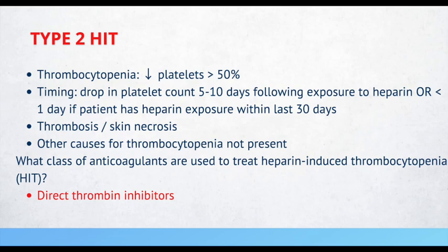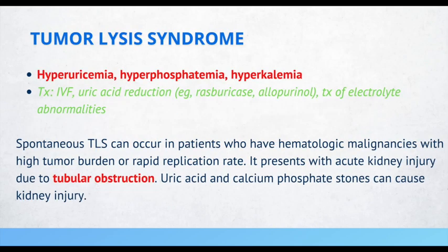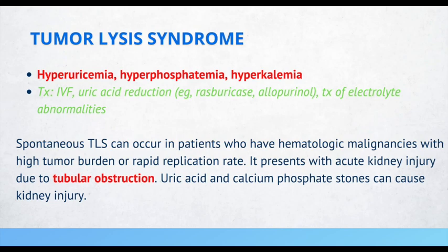In tumor lysis syndrome, you'll see electrolyte abnormalities such as hyperphosphatemia, hyperkalemia, and hyperuricemia. Treatment requires aggressive IV fluid hydration, uric acid reduction with agents such as rasburicase, and treatment of electrolyte abnormalities. Patients can develop spontaneous tumor lysis syndrome with hematological malignancies with high tumor burden or rapid replication rate. It presents with acute kidney injury due to tubular obstruction — uric acid and calcium phosphate stones can cause kidney injury.